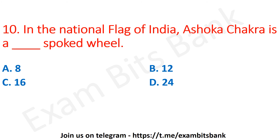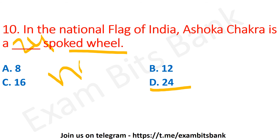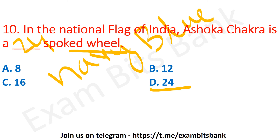In the national flag of India, the Ashoka Chakra is a how many-spoked wheel? The options are 8, 12, 16, or 24. The correct answer is option D — 24. The Ashoka Chakra in the national flag is a 24-spoked wheel, which is navy blue in color. It represents the Dharma Chakra, taken from the Lion Capital of Ashoka. Our national flag was designed by Pingali Venkayya.